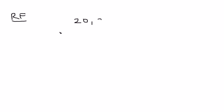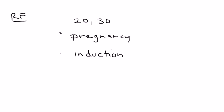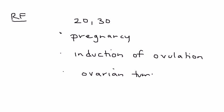So why would this happen? What are some of the risk factors? Mostly we're talking about women of reproductive age, in their 20s and 30s. Risk factors include pregnancy, any kind of procedure or process involving induction of ovulation, and also ovarian tumors — in particular benign, non-cancerous ovarian tumors.